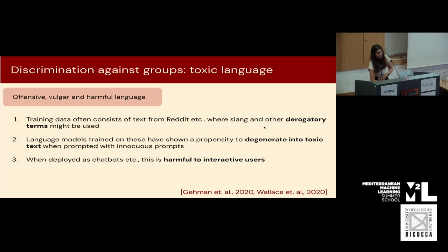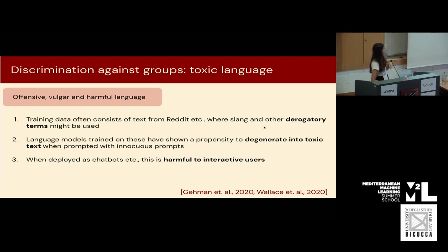Another thing that is actively harmful to people interacting with models is the propensity of models to generate toxic language, or in the case of vision models, to generate really obscene images. As a user, when you're using a language model or a vision model, you're not signing any contract that allows them to generate text or image outputs that might be harmful to you. But in their training data they've seen lots of derogatory terms, slang, and toxic text. Models have a tendency to degenerate into toxic and harmful text, placing a psychological tax on users who unknowingly might be interacting with these systems without being aware that they have this ability to generate harmful output.